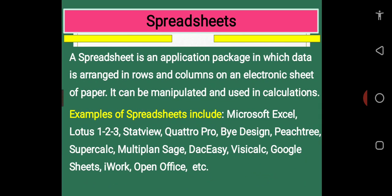Previous lessons in junior secondary one and two on computer software would have taught you that spreadsheets belong to the group of application software in computer. What then is a spreadsheet? A spreadsheet is an application package in which data is arranged in rows and columns on an electronic sheet of paper in your computer system.